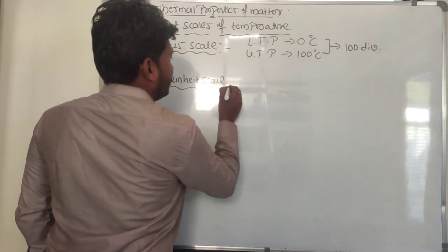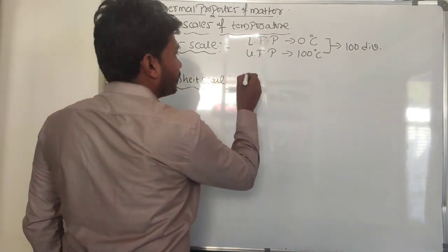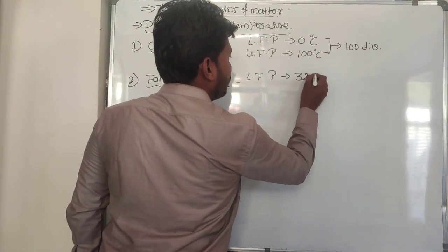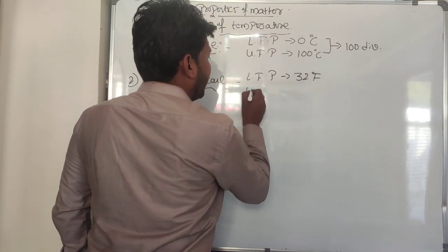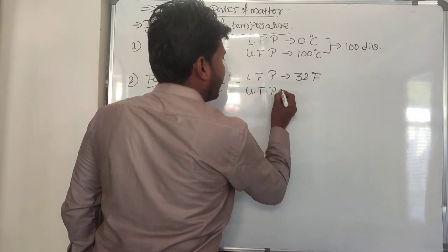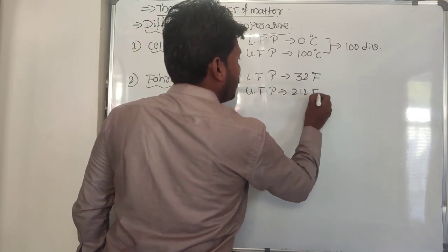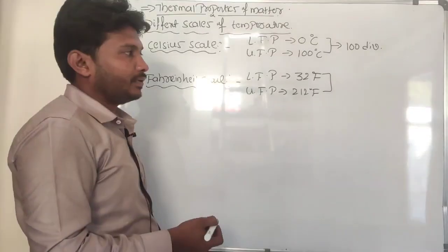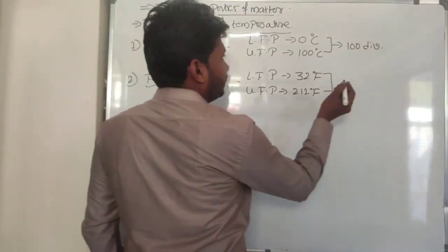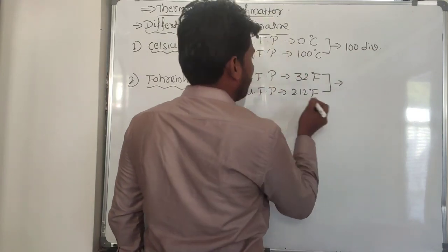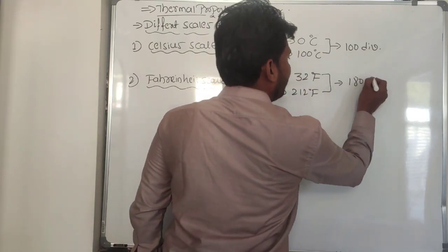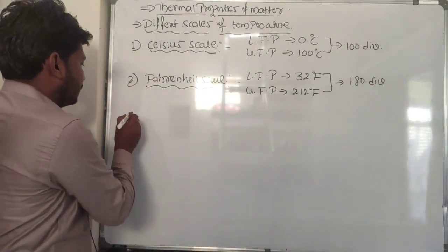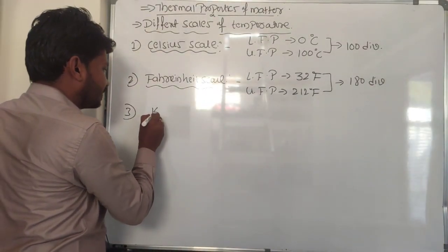In the case of the Fahrenheit scale, the lower fixed point is 32°F and the upper fixed point is 212°F. From the upper to the lower fixed point there are 212 minus 32 = 180 divisions.